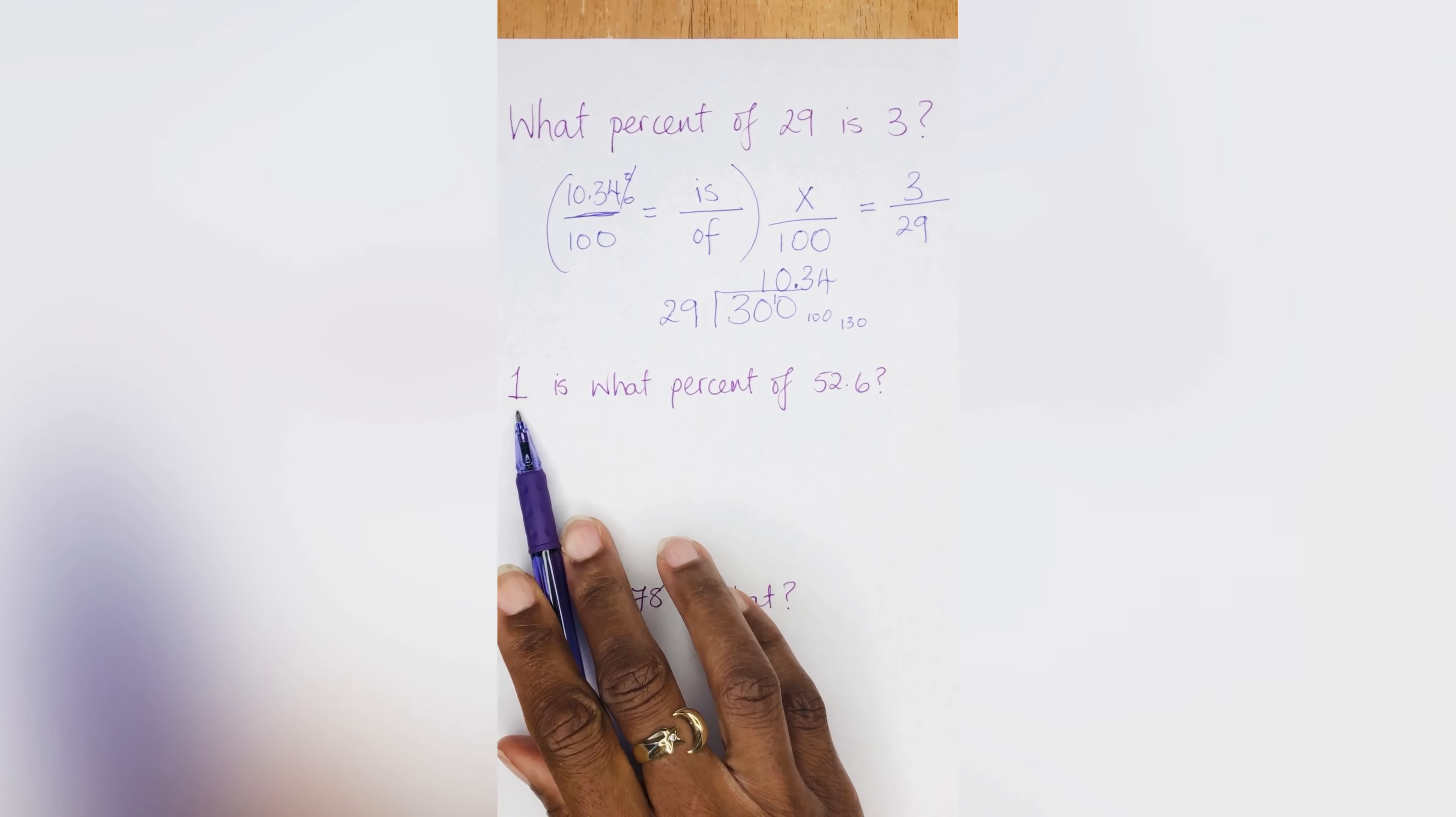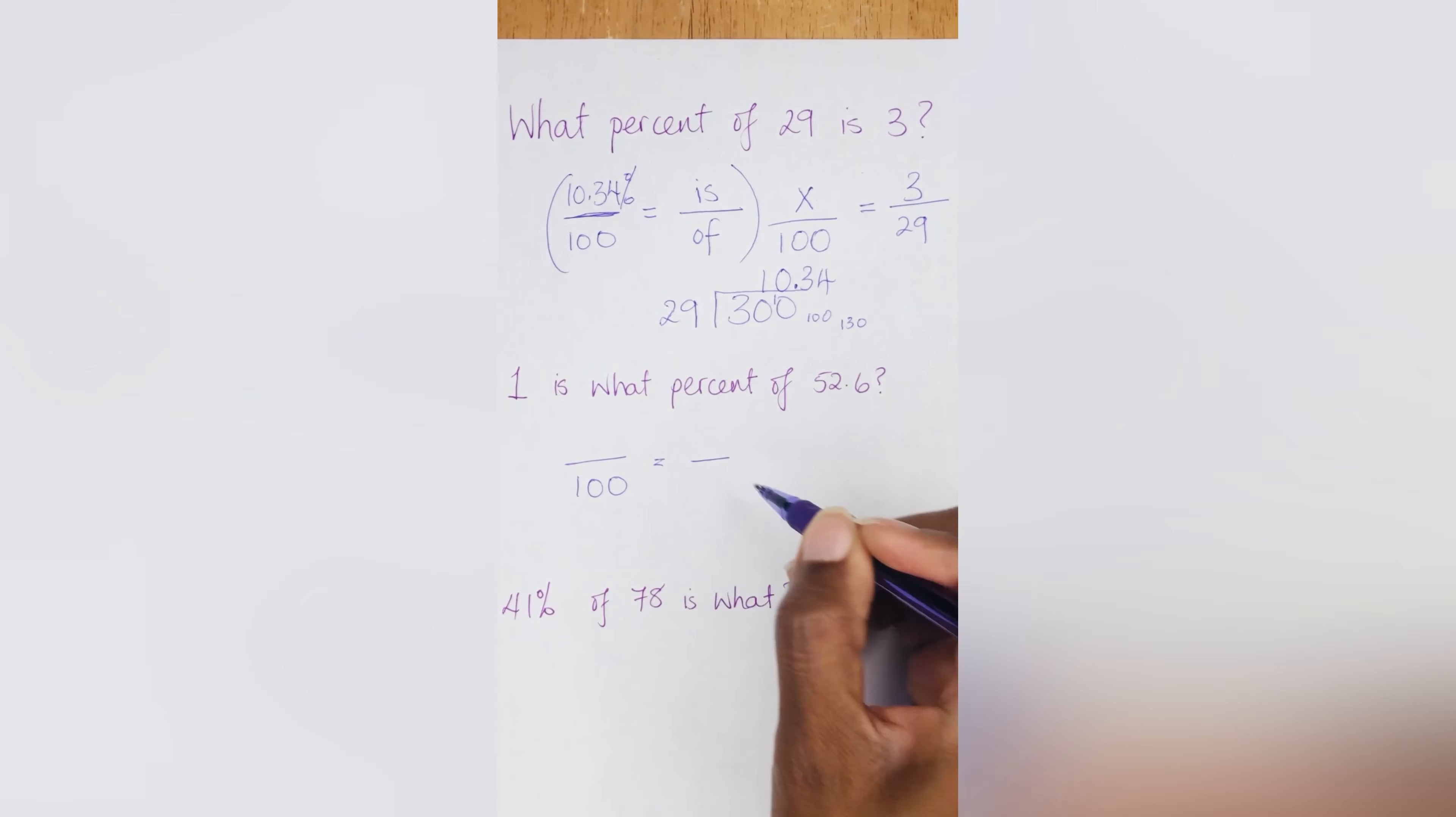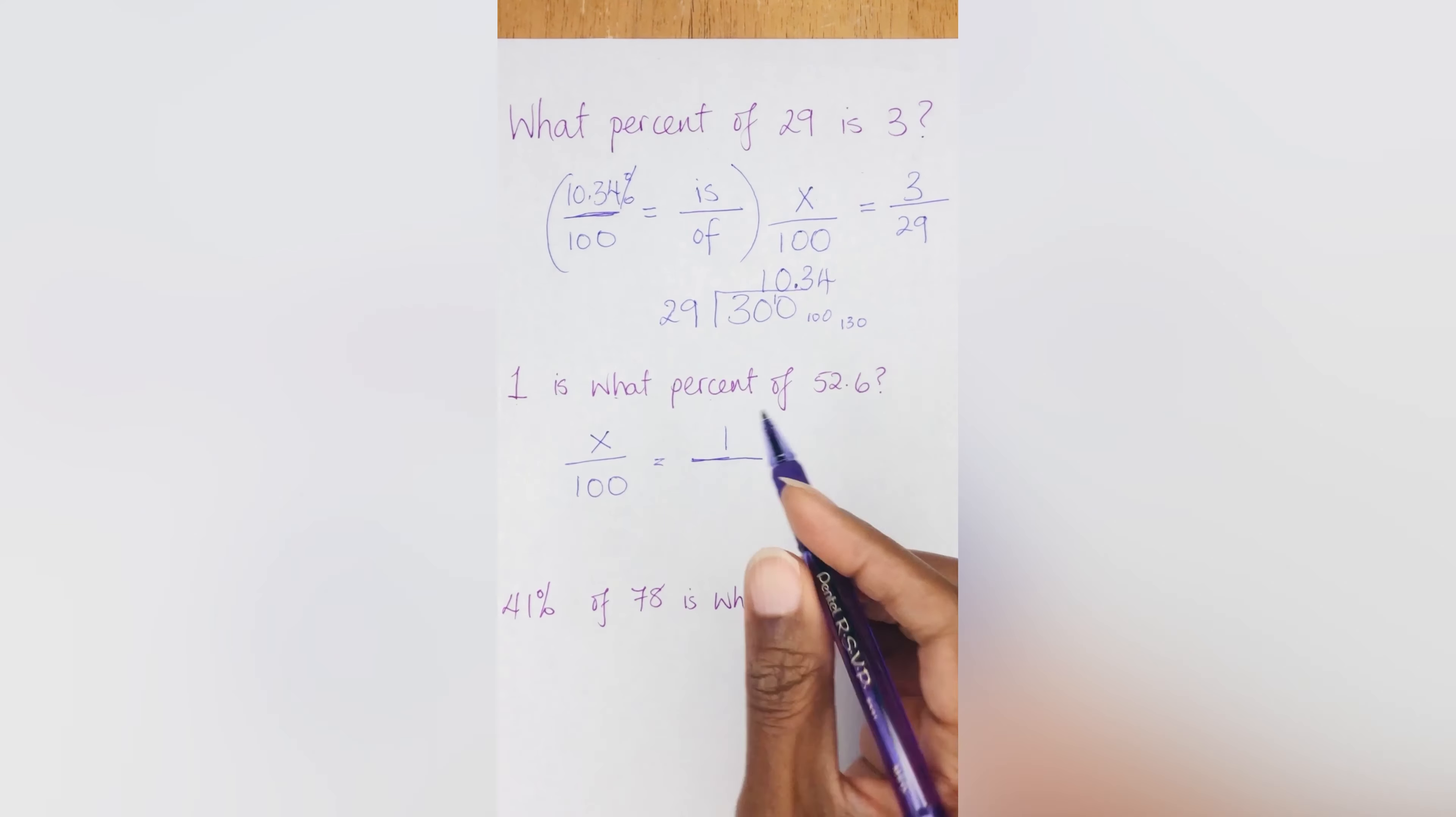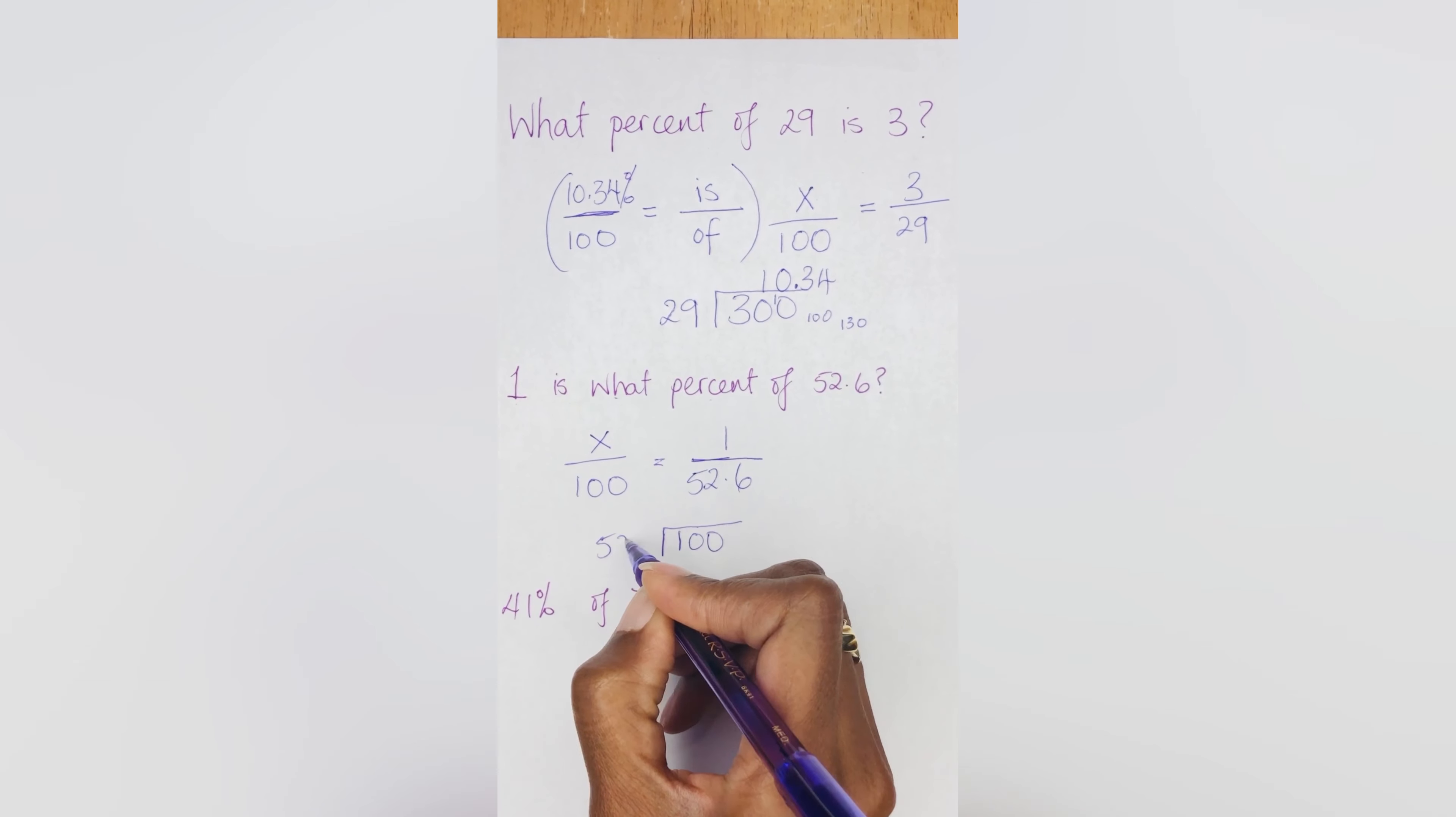All right. Let's go here. One is what percent of 52.6? So if we're using this formula, we're using the same thing. So we're going to set it up here like that. And then we're going to put the numbers in. So what percent is here again? So your X therefore goes above the 100 because you're finding out what percent. And then one is, so your 'is', your 1 goes upstairs and your 52.6 goes downstairs because that's the 'of', and then you do your cross multiplication again. So the same thing, 52.6 times X, 100 times 1. So 100 times 1 is 100. And you're going to divide that by 52.6.